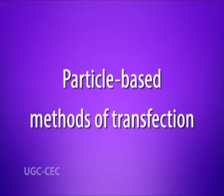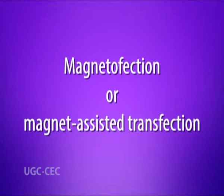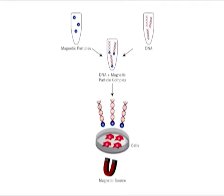Next is the particle-based methods of transfection. First is magnetofection, which is a transfection method that uses magnetic force to deliver DNA into the target cell. Nucleic acids are first associated with magnetic nanoparticles. Then, application of magnetic force drives the nucleic acid-particle complexes towards and into the target cells, where the cargo is released.